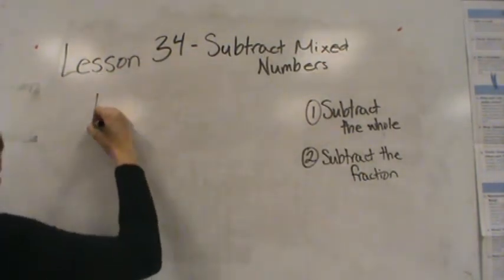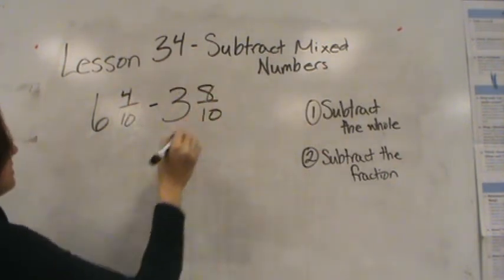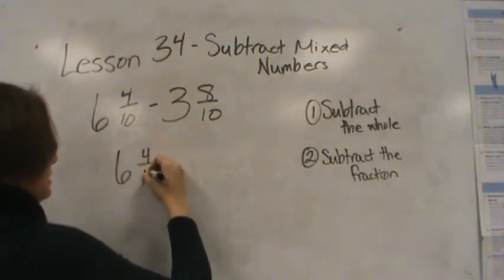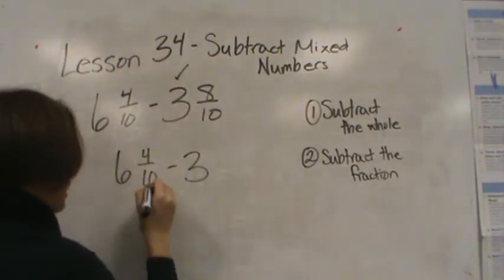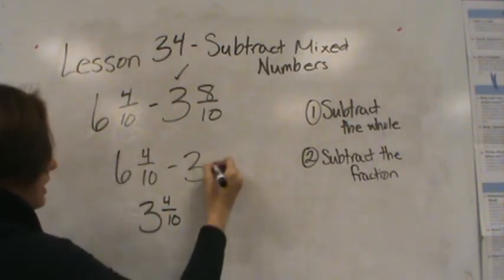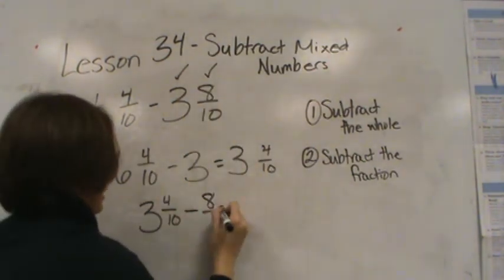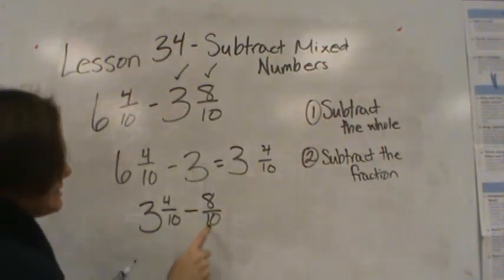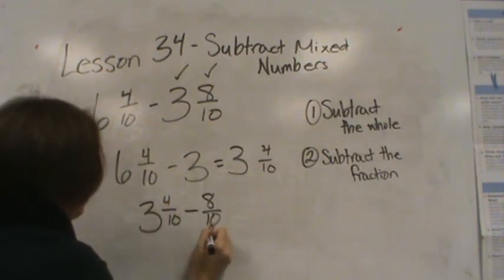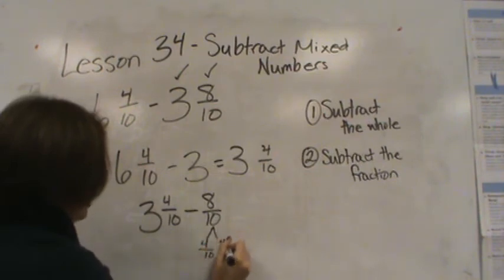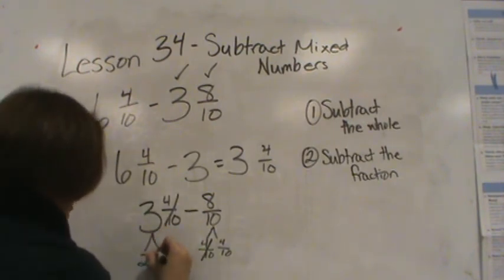I have 6 and 4/10 minus 3 and 8/10. Let's start by subtracting the whole: 6 and 4/10 minus 3. So 6 minus 3 is 3 and I still have that 4/10 left, so 3 and 4/10. Then I'm going to subtract the fraction, subtracting 8/10. I know I'm going to have to regroup because 8/10 is more than 4/10. So I need to break up this 3 to make more tenths. Decompose to get 4/10 plus 4/10. 4/10 minus 4/10 is nothing.